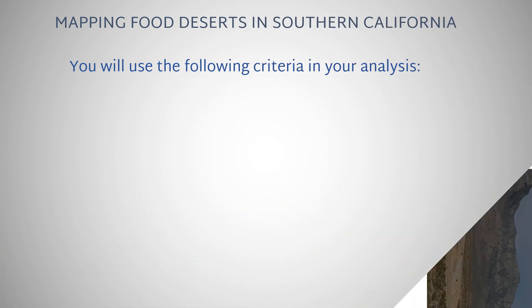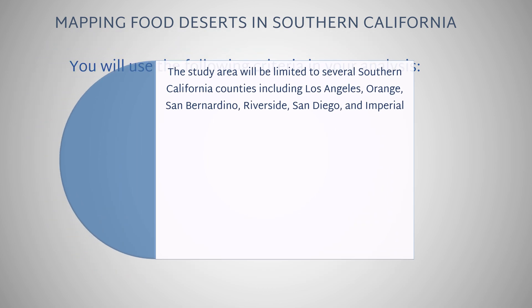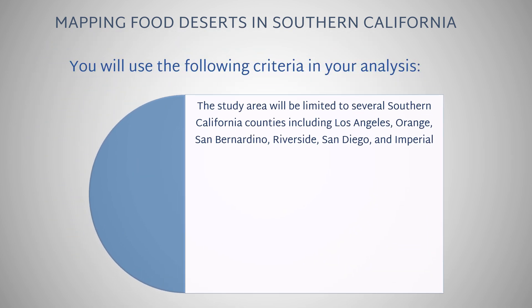You will use the following criteria in your analysis. The study area will be limited to several Southern California counties including Los Angeles, Orange, San Bernardino, Riverside, San Diego, and Imperial.